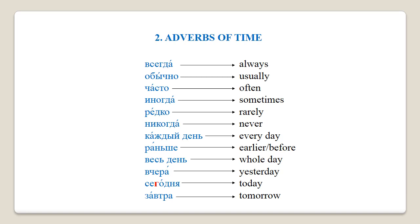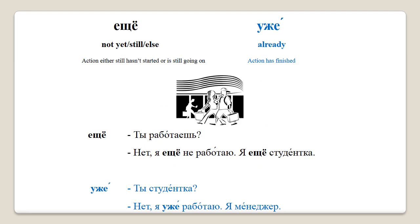We can now start using these adverbs of time to talk about how often we do things. Two other words we're going to study today are уже, which was mentioned in lecture 10 and stands for 'already,' and еще. Еще has quite a few meanings such as 'not yet,' 'still,' or 'else,' which depend on the context. We'll see in a second how we can use them in a conversation.